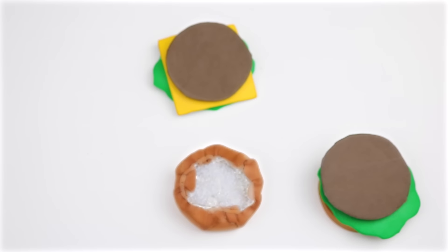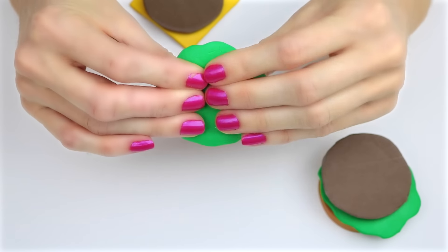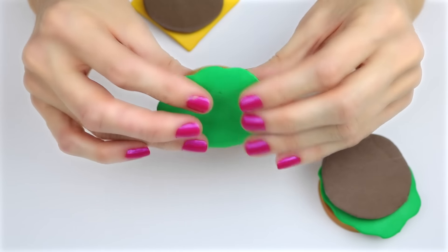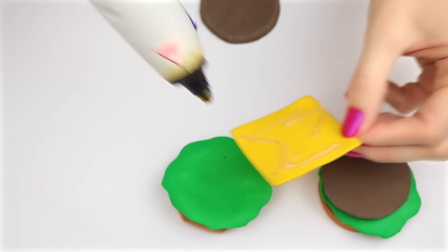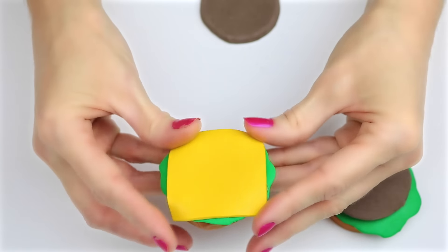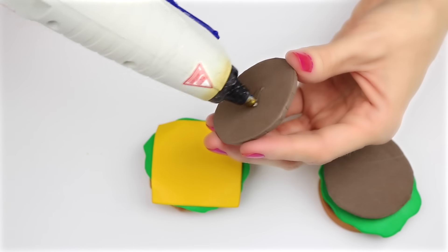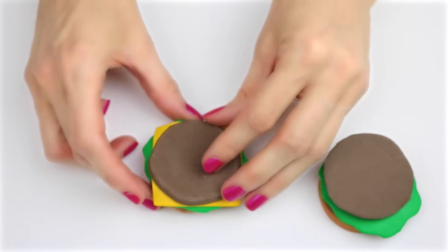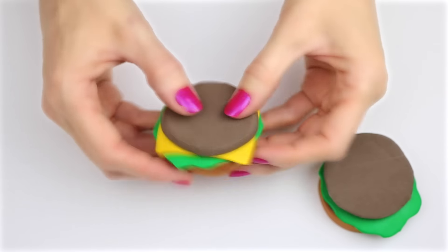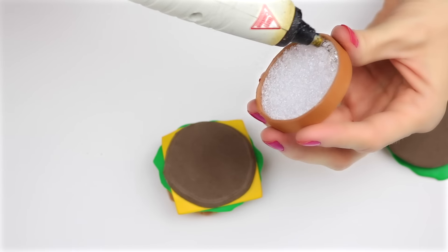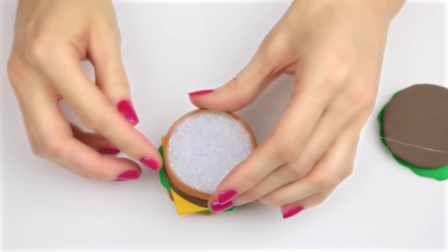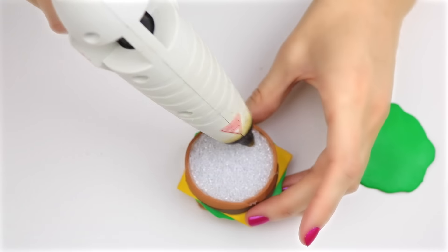Now, to assemble the Big Mac, take the bottom of the bun, hot glue the lettuce, cheese, and hamburger patty down. Next, hot glue the middle bun, then on top of that, the lettuce and hamburger.